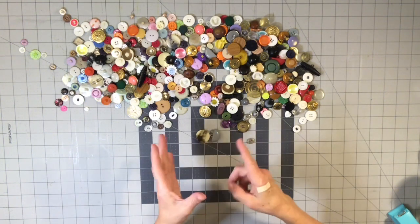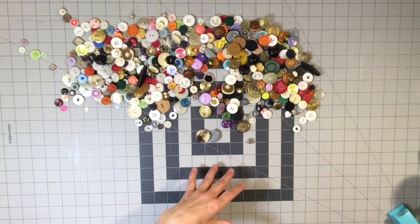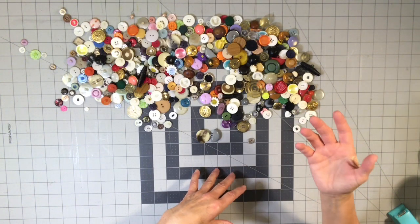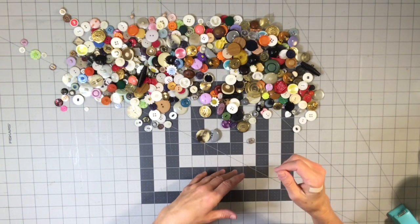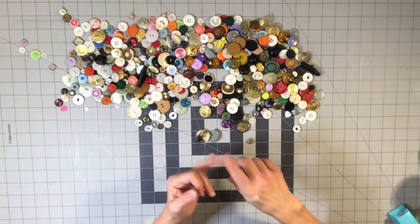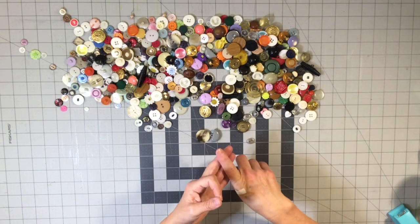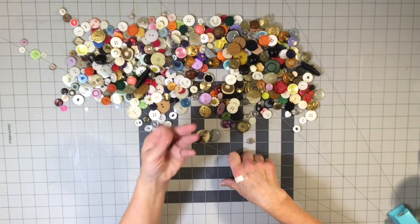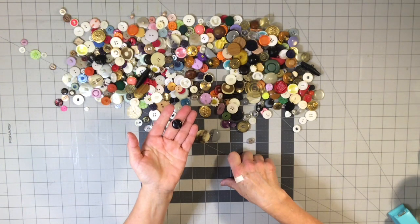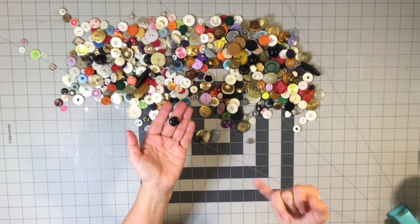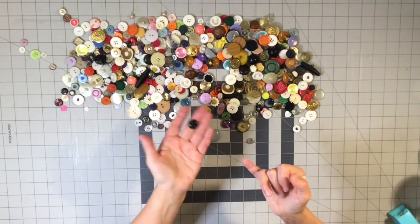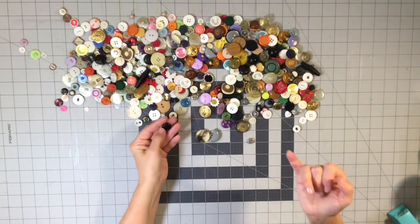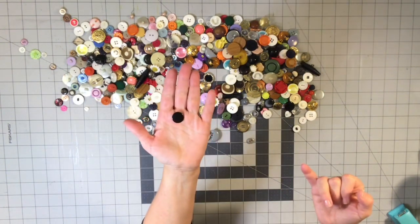There are shank buttons, two-hole buttons, four-hole buttons, and things like this. I guess it would be considered a two-hole because it's still a flat button, but the holes are different, so I'm not sure if that would be considered a shank or just a two-hole, but it doesn't go through the top.